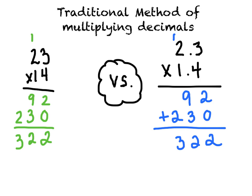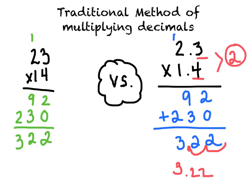The only difference is now we need to count how many digits are behind, or to the right of, the decimal place in the problem. We see that the 3 is behind the decimal place and the 4 is behind the decimal place, so that means we have 2 digits behind the decimal. We're going to count in 2 places from the end and put our decimal there. So our answer to this problem would be 3.22. You need to count how many digits are behind the decimal place, and that many digits need to be behind the decimal in your answer.